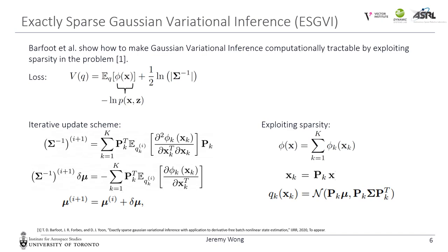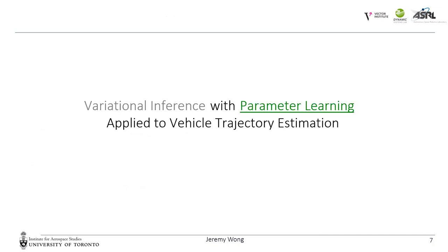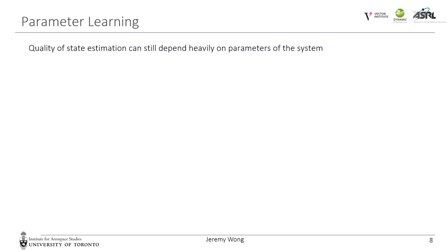We also note that approximating the expectations at only the mean is equivalent to the MAP Gauss-Newton optimization. The ideas from this paper are foundational to what we will be presenting in this video. Now that we've talked about variational inference, let's move on to parameter learning.